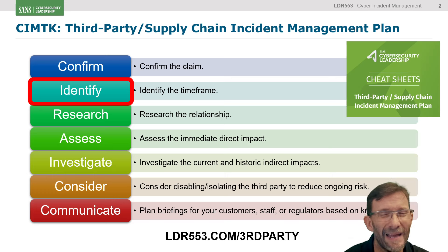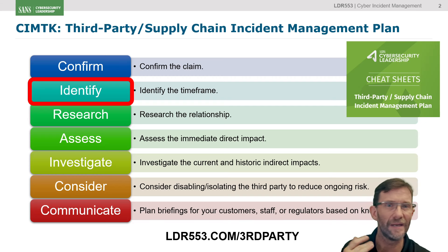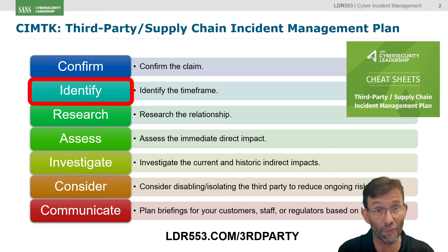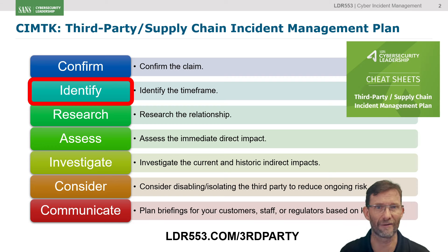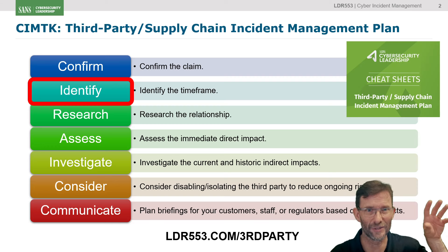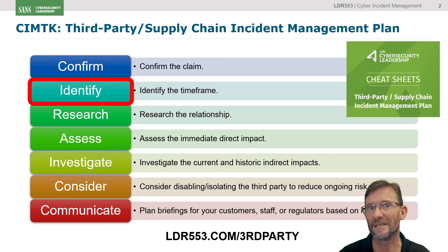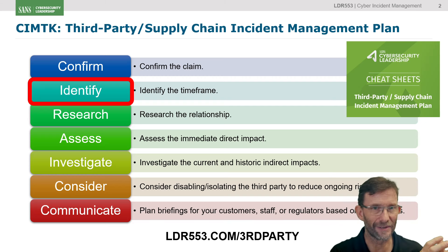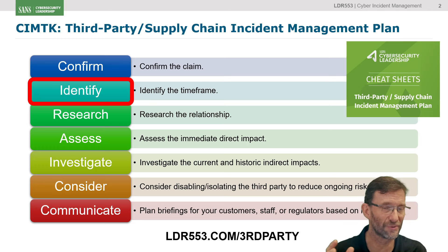When talking to the third party, also ask about indicators of compromise — what got their spidey sense tingling? Why did they kick off their incident? Even if they can't tell you whether you're exactly affected, it's always good to get a high-level diagram of where the attackers are versus where your data is. Lots of systems in between is still somewhat reassuring. If they say attackers are in the corporate network and your data is in the customer area, that's at least some break between where the attacker is and where they are not.